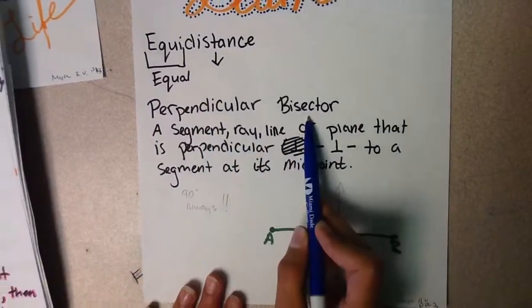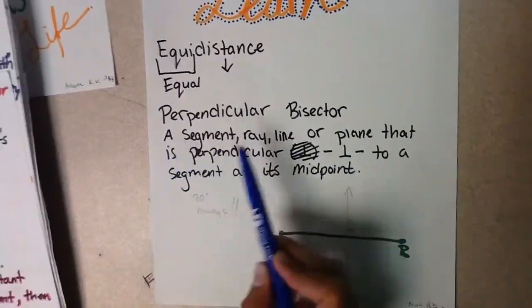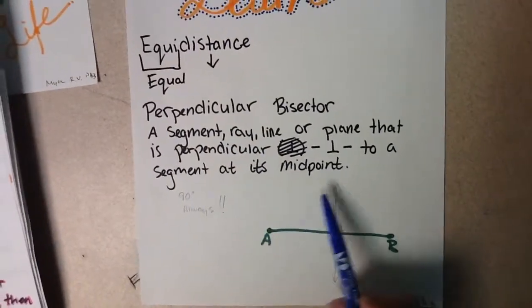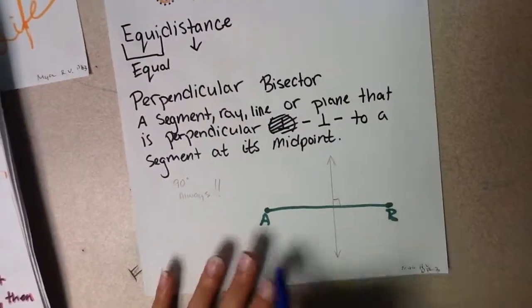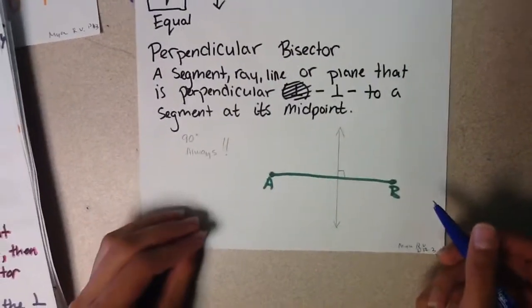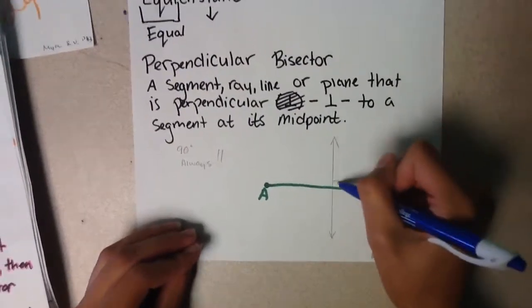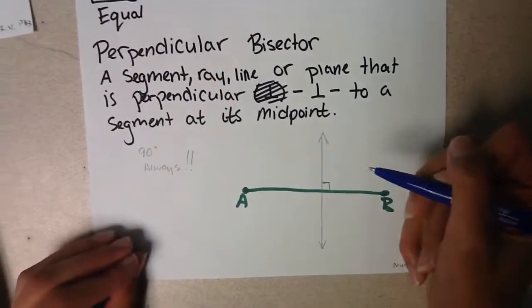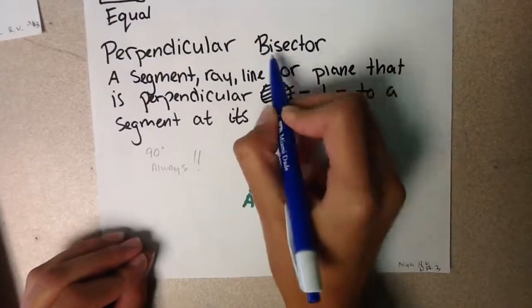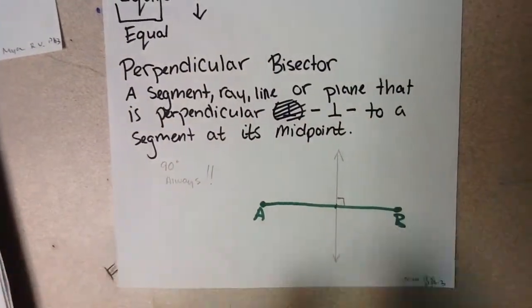The second word is perpendicular bisector, which is a segment, ray, line, or plane that is perpendicular to a segment at its midpoint. Right here I have a segment as an example. In order for it to be a perpendicular bisector, it has to make a 90 degree angle always, and it has to intersect at its midpoint. Bisector means two, and you're basically splitting it.